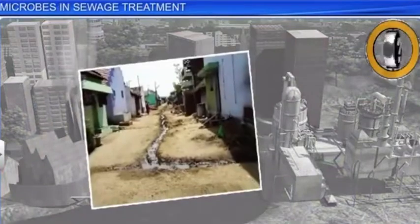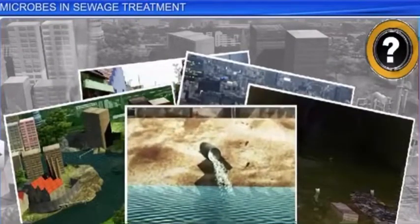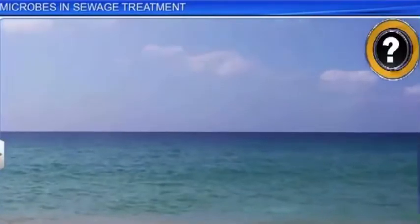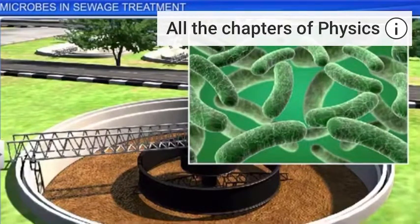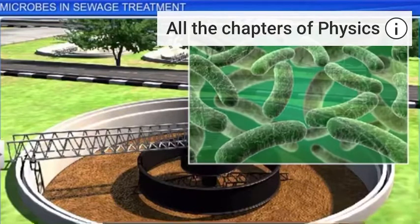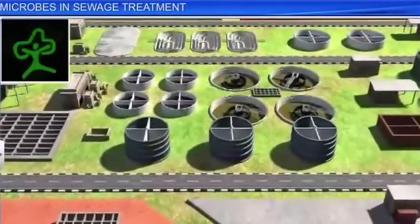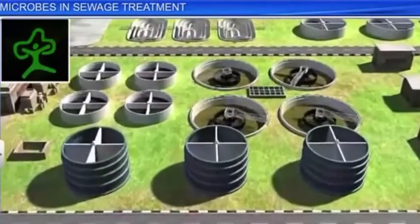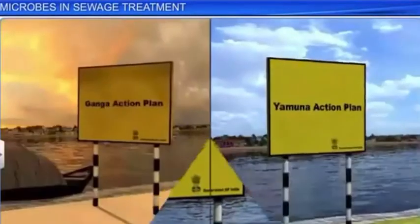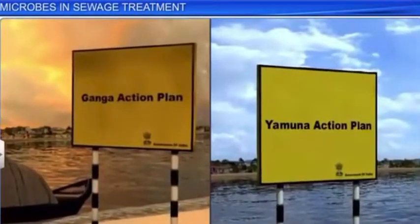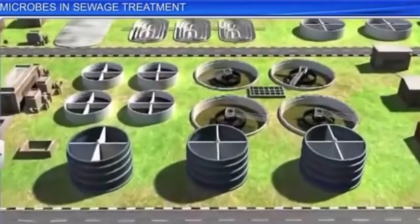Have you ever wondered where all this sewage produced by us goes? It certainly cannot be just deposited as it is into rivers or the sea. Sewage is first treated by microbes that are naturally present inside it before it can be safely disposed of in rivers and streams. That is why the Ministry of Environment and Forests has promoted the construction of sewage treatment plants under the Ganga Action Plan and Yamuna Action Plan to save major rivers like the Ganga and Yamuna. In India, microbes are already treating gallons of wastewater inside several sewage plants around the country every day.